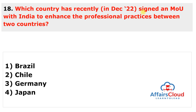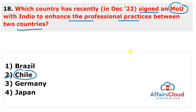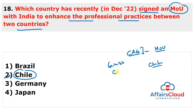Question 18: Which country signed a Memorandum of Understanding with India to enhance professional practices between the two countries? The answer is Chile. The Comptroller and Auditor General (CAG) of India and the Comptroller General of the Republic of Chile signed an MOU to develop institutional and professional capacities and share best practices. The MOU was formally signed in Chile by Girish Chandra Murmu, the CAG of India.